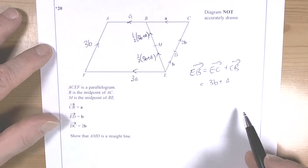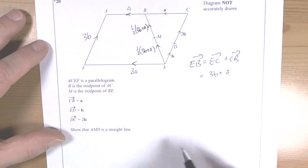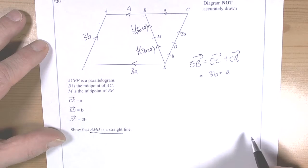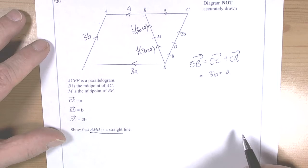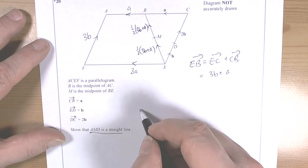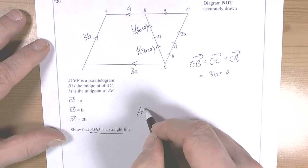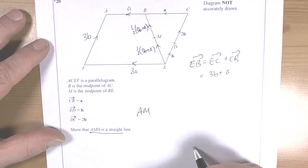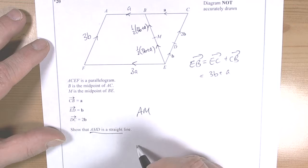So we've got our picture labeled up. Now we can go through and decide what the question actually wants. So it wants for you to show that AMD is a straight line. Now if that's true, then if I work out the vector A to M and then I work out the vector A to D, and they're multiples of each other, then that will be fine.